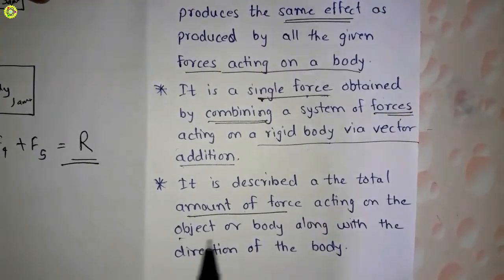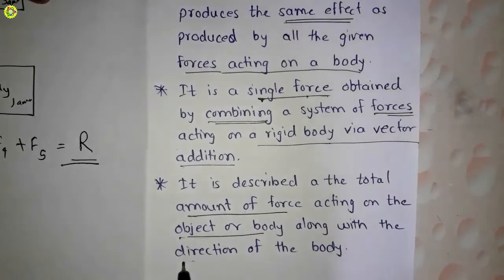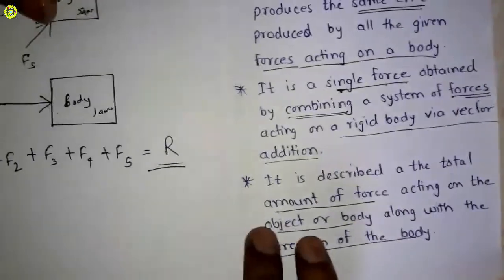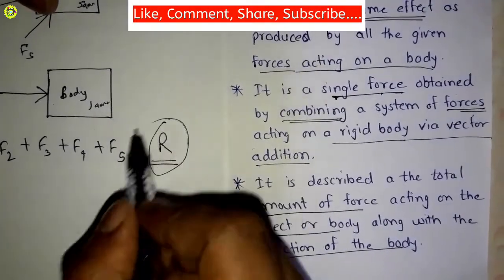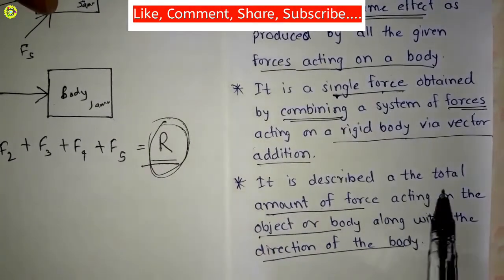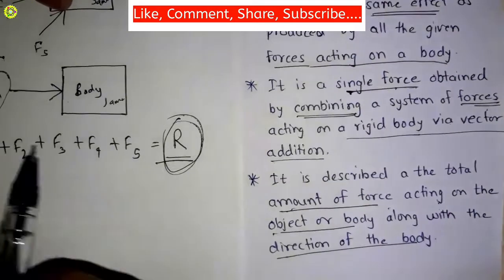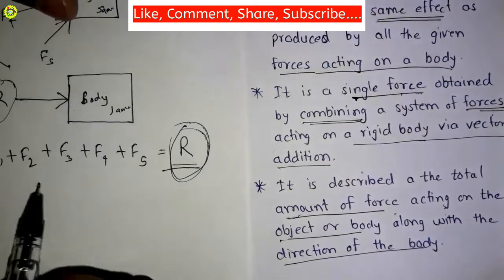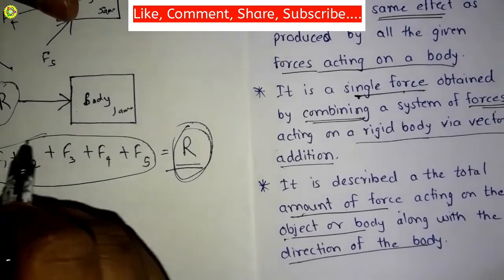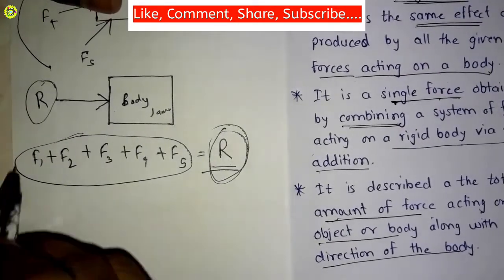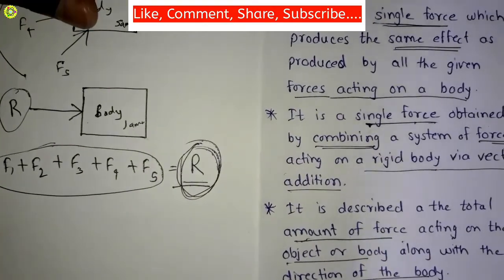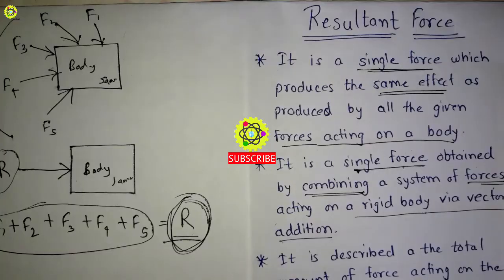Resultant force describes the total amount of force acting on the object or body, along with the direction of the body. This addition of all forces gives us the total amount of force, that is the resultant force.